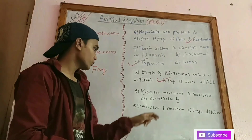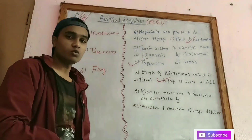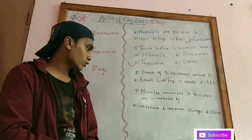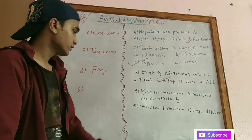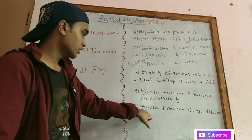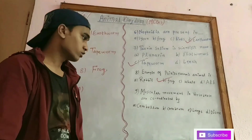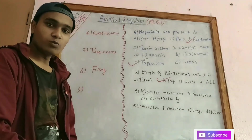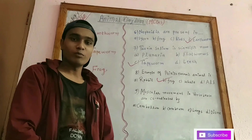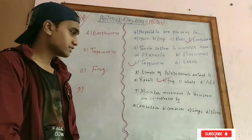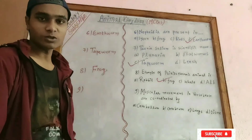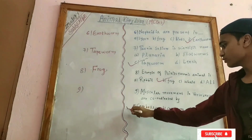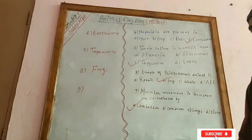Question number 9: muscular movements in vertebrates are coordinated by which part? Options include cerebellum or lungs. Since muscular movement is controlled by the small brain, and the cerebellum is called the small brain, therefore cerebellum is the answer.